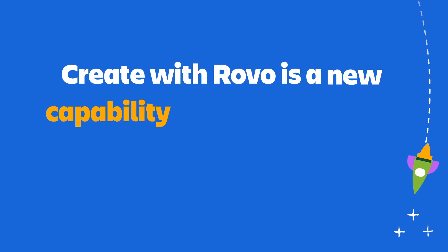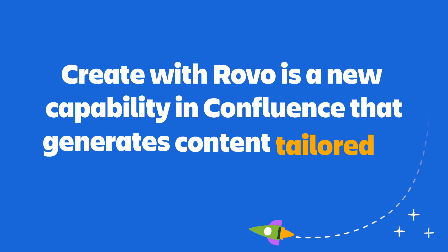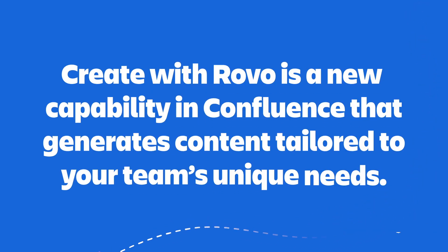So first things first, Create with Rovo is a new capability in Confluence that generates content tailored to your team's unique needs. It uses all the information that you have in Jira, Confluence, Loom, and Atlassian's teamwork graph to create content that is specific to your job and the work that you do.